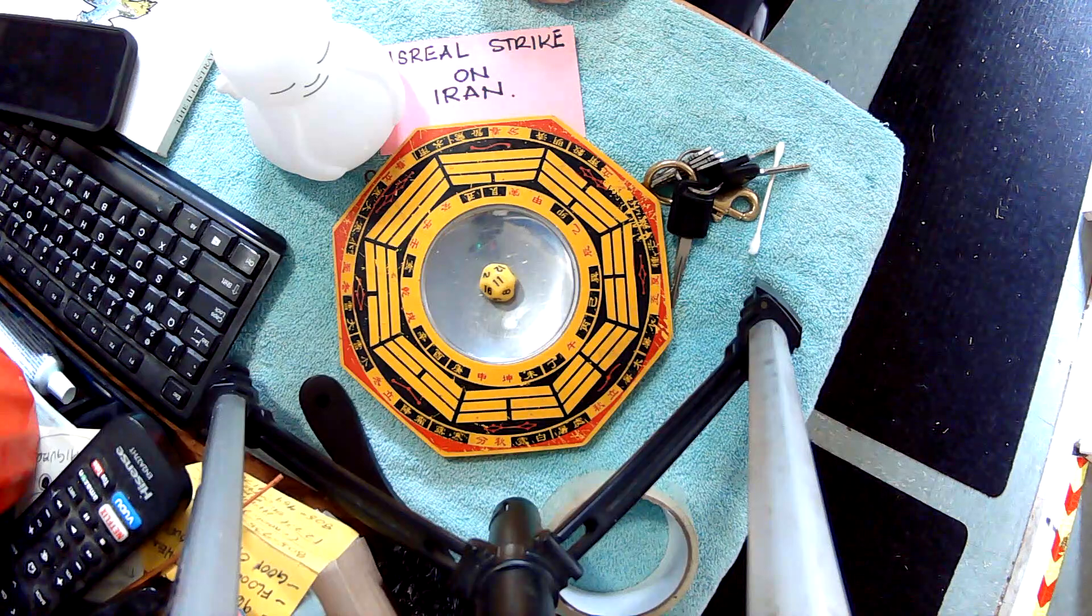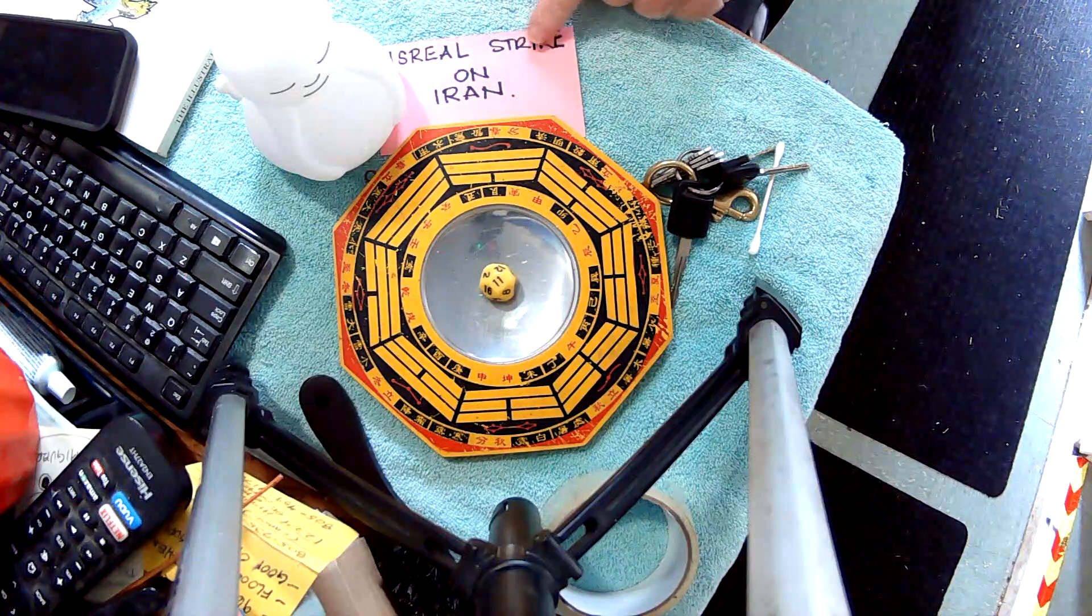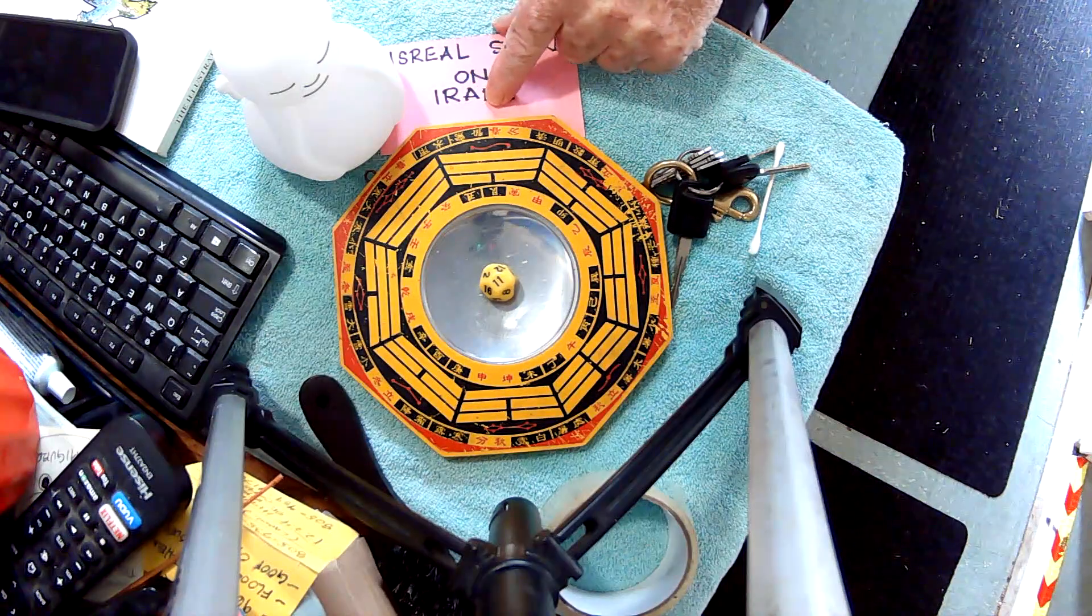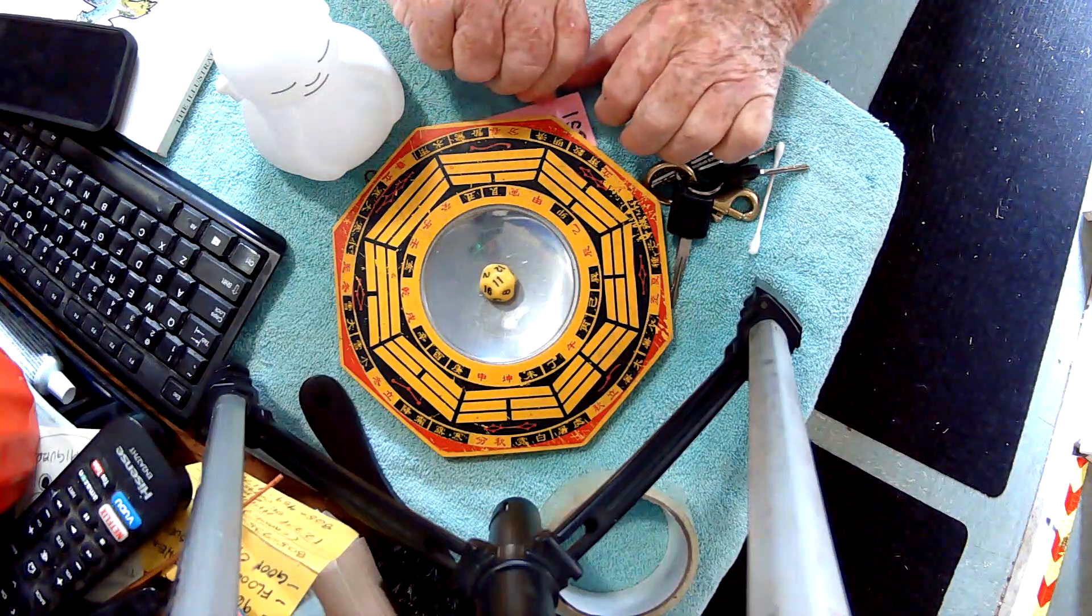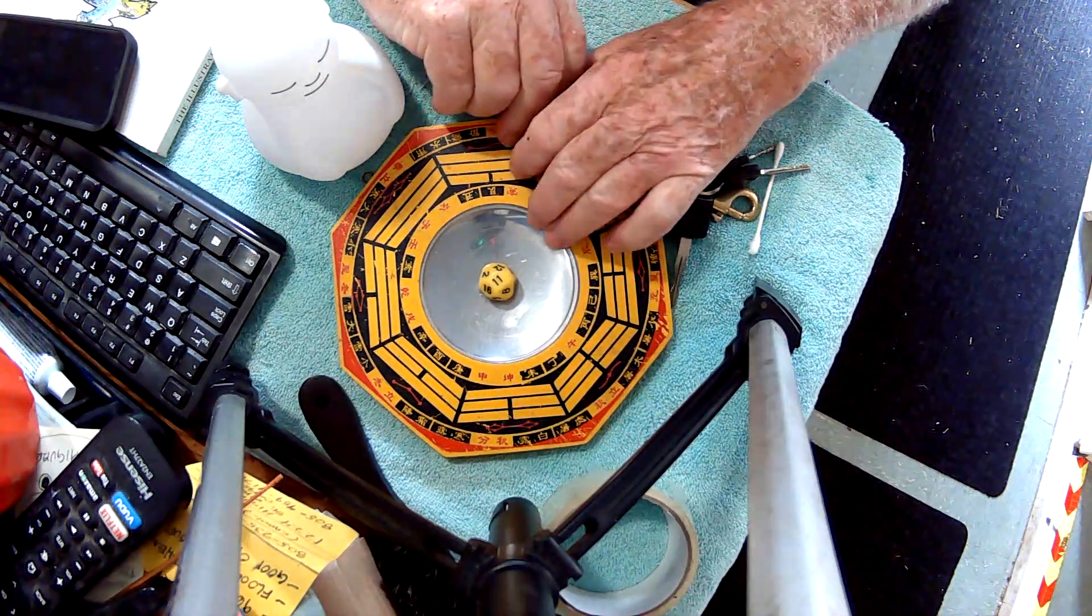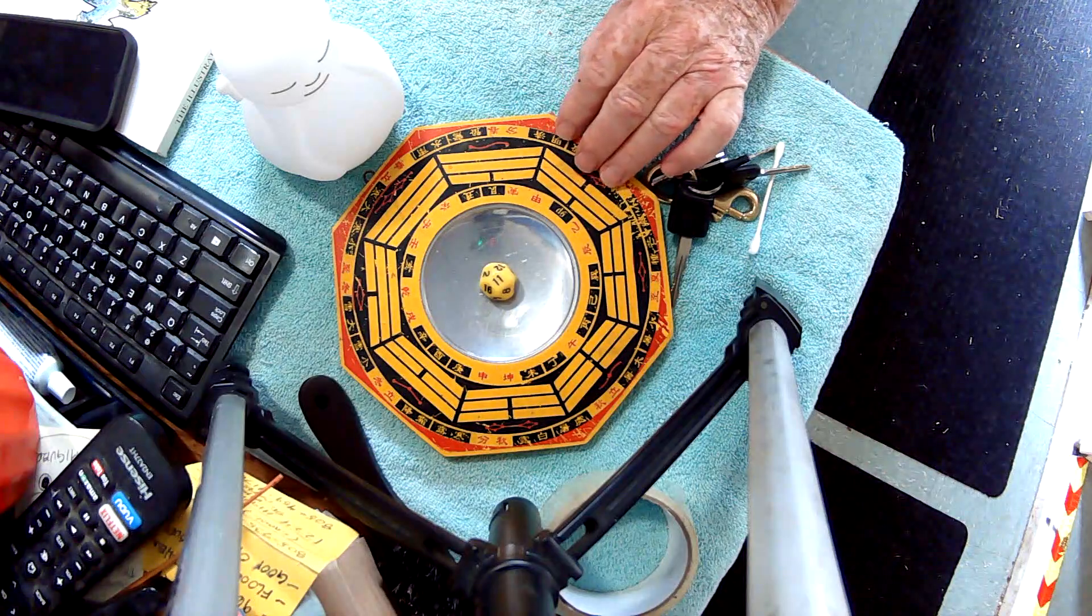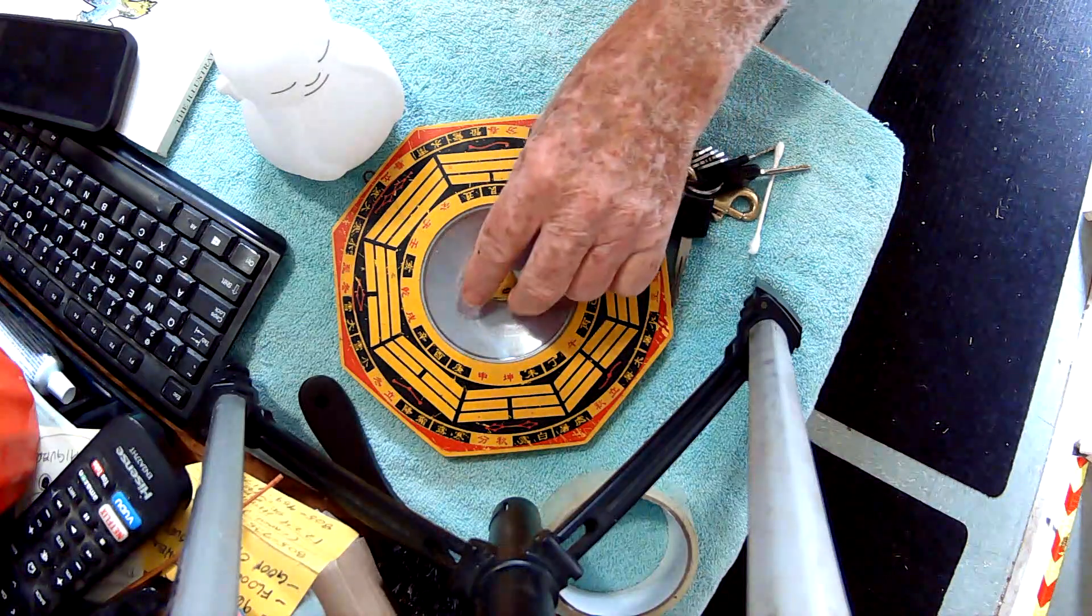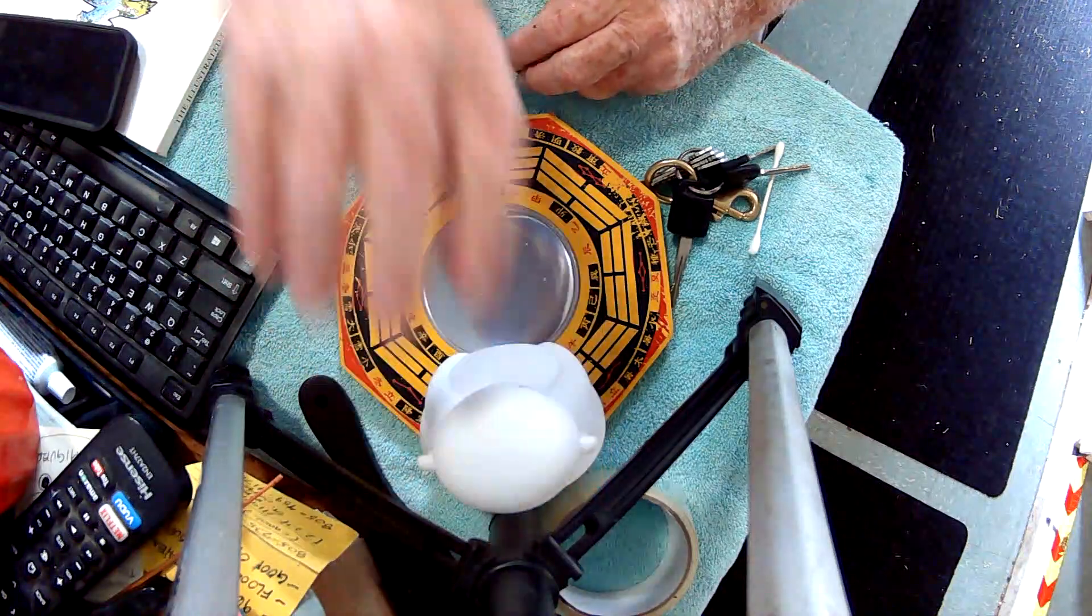Okay, October 5th, we're going to do an Israel strike on Iran at the I Ching. I'll put the writing underneath where I'm casting the probabilities to give us one of 64 pictures in the I Ching. Here we go, folks. Let me bounce it off of Buddha's belly.